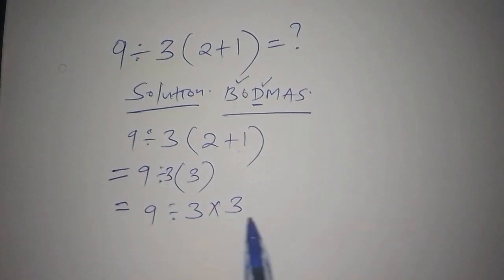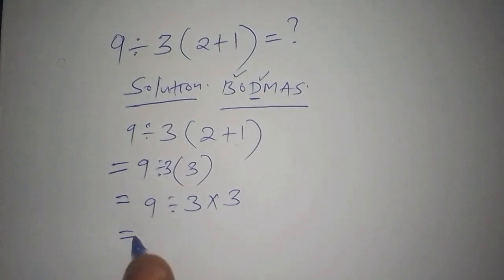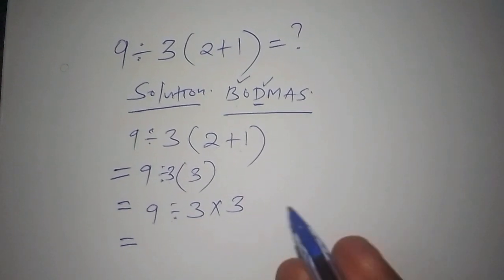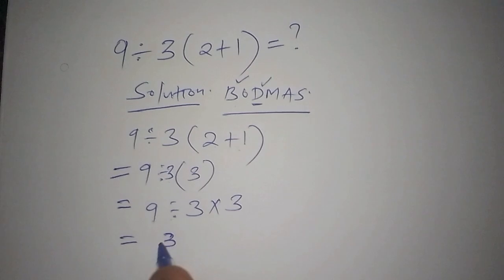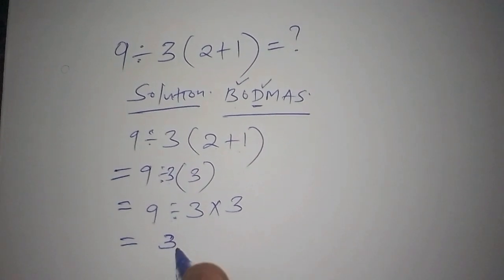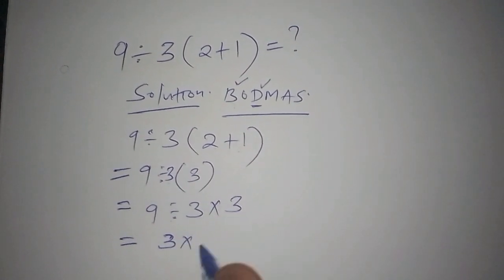That is 9 divided by 3. So here, 9 divided by 3 is 3. We shall have 3 there, then multiply by 3.